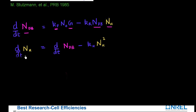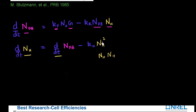Similarly, I can write an equation relating the increase in the number of hydrogen atoms. It would be proportional to the number of dangling bonds created, because every time you create a dangling bond, you create a hydrogen atom as well. There's also a reverse process: if you have two hydrogen atoms present, they can form a metastable state with each other. That reverse process is proportional to the square of the concentration of hydrogen atoms.